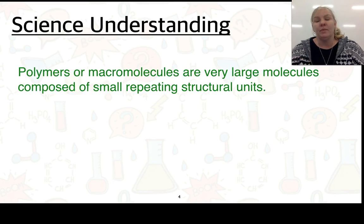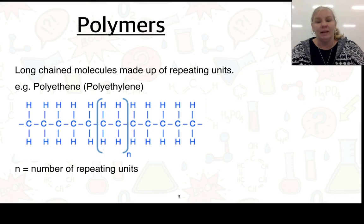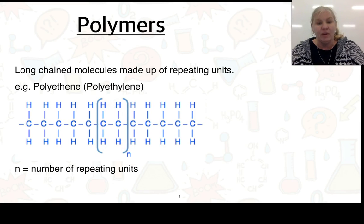Polymers, or they can be called macromolecules, are very large molecules composed of small repeating structural units. Here's an example: we've got polyethene, or it can be called polyethylene. It's a long-chained molecule made up of repeating units. If we look at the diagram, we've got a little n here, showing that what's within the bracket is repeated numerous times.